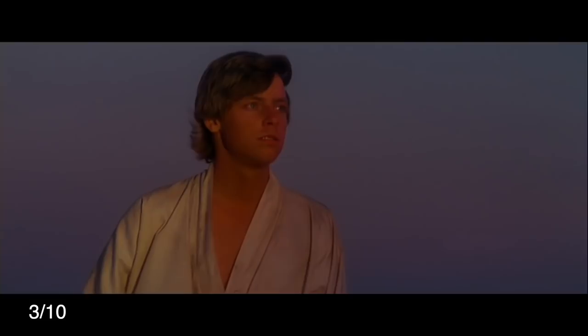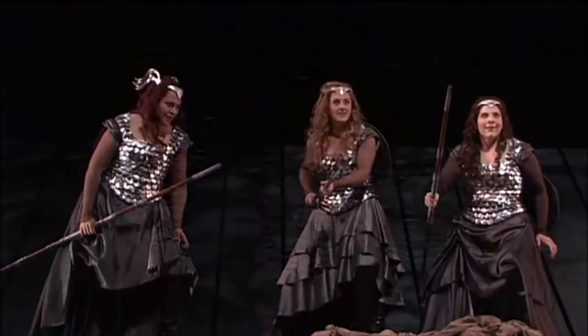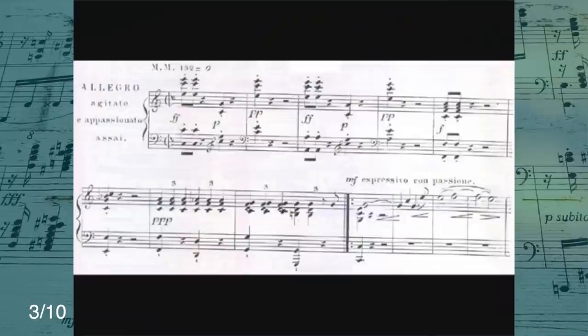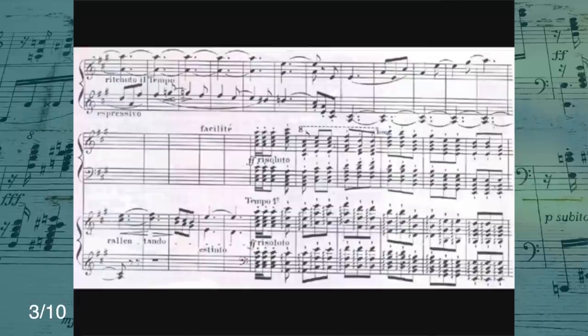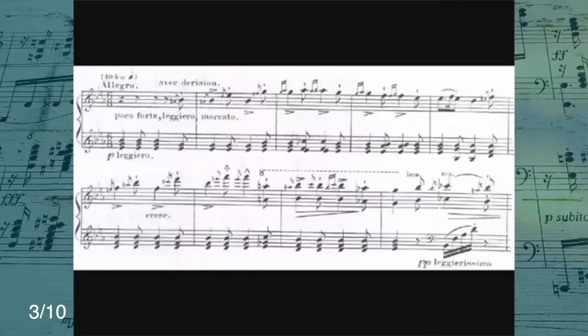A leitmotif is a short musical idea or fragment that becomes associated with a specific character or idea. If you've ever seen Star Wars and heard Luke Skywalker's theme or the Force theme, you've heard a leitmotif. Berlioz called it a fixed idea, but the concept is the same. He's not the first composer to do this — Wagner would become way more famous for doing it in his operas — but Berlioz really leans into it, using his fixed idea in all five movements of the symphony with different presentations and variations, but always in a recognizable way.